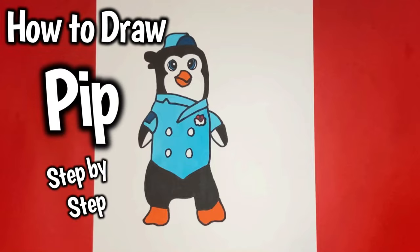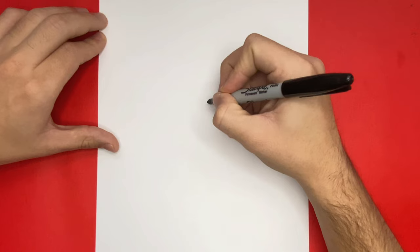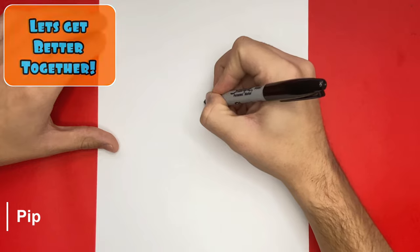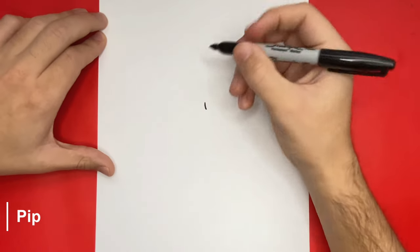How to Draw Pip the Penguin Step-by-Step. For the first step we're going to begin by making two long sharp edges. These will be Pip's collar.